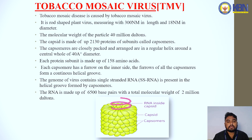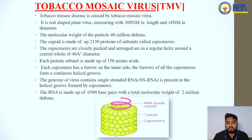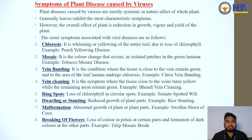The genome of TMV contains a single-stranded RNA present in the helical groove formed by the capsomeres. The RNA is made up of 6500 base pairs with a total molecular weight of 2 million daltons. This is the picture of TMV — the tobacco mosaic virus — showing the group of capsomeres.